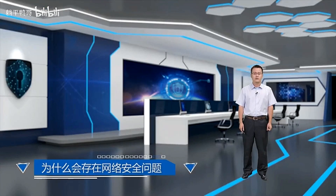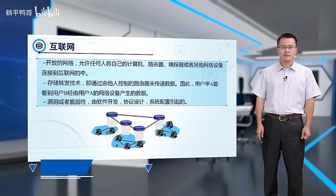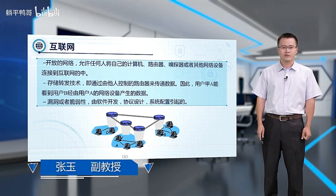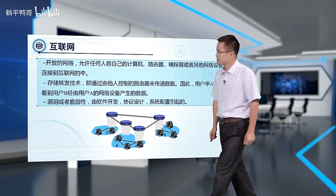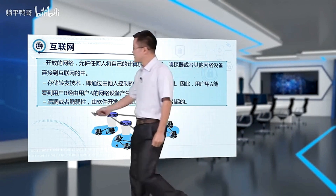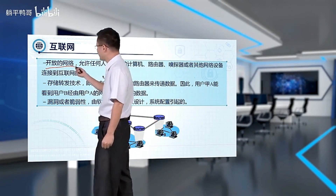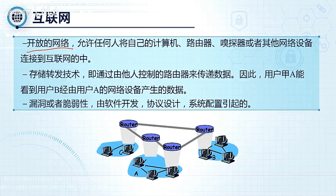Hello students. This lesson explains why network security issues exist. Let's examine why cyber security problems occur, focusing on three main aspects. The first is the open nature of networks — we use an open internet environment, allowing anyone to connect their devices to our network.